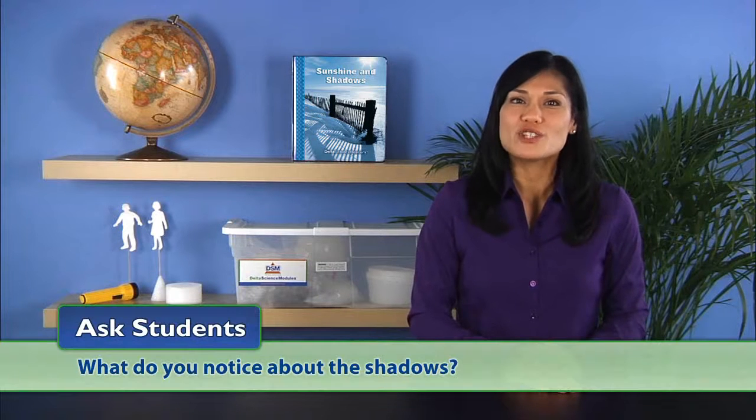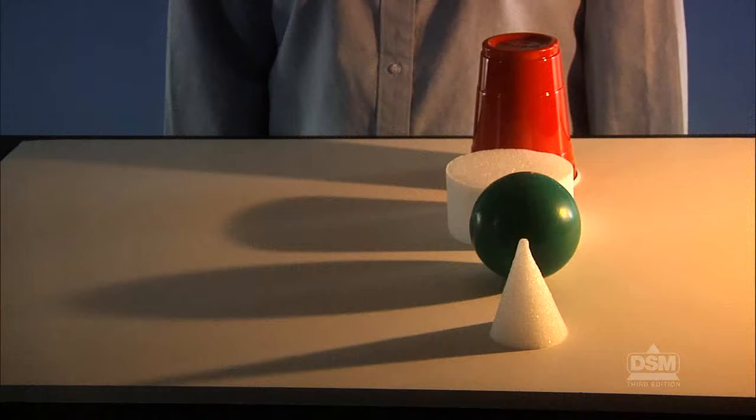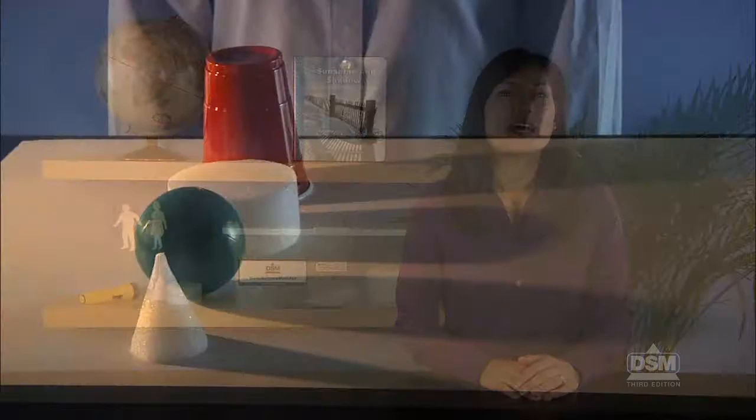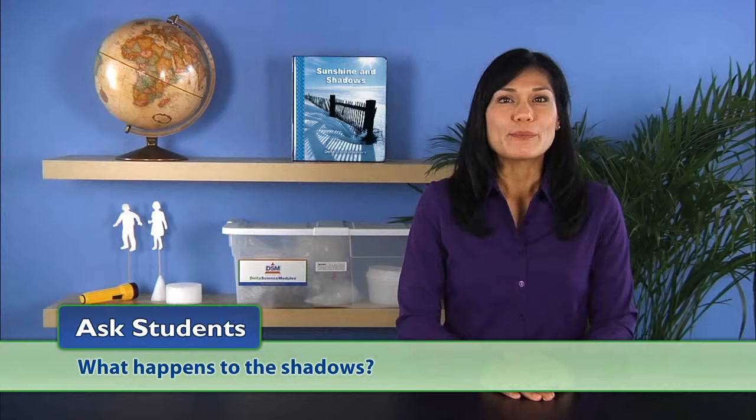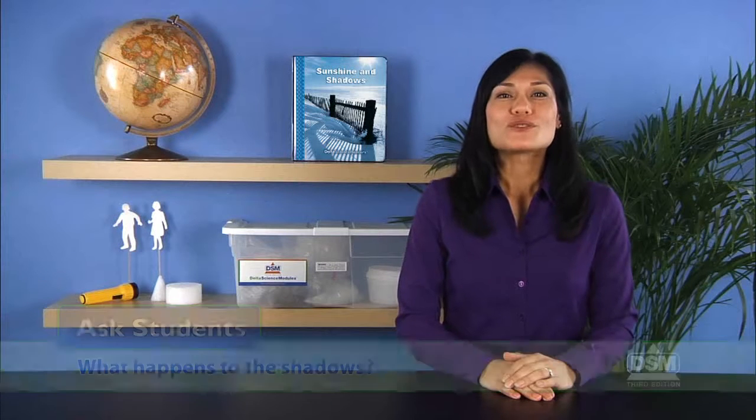Once they have done this, darken the room and ask students, what do you notice about the shadows? Students should notice that they all fall on the same side of the objects. Have students move the lamps about one meter to the other side of the row of objects. Then ask, what happens to the shadows? Students should note that the shadows also switch sides.